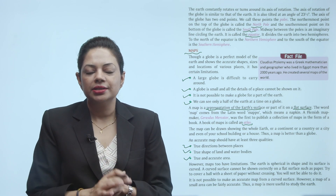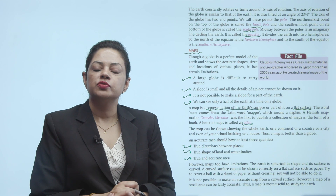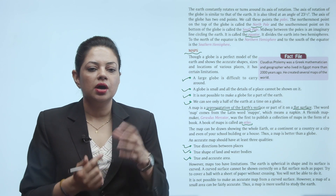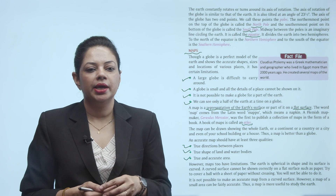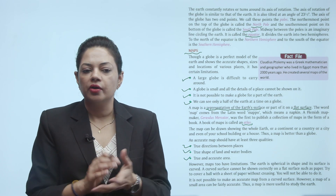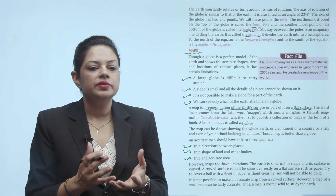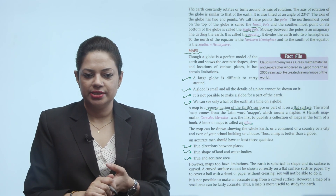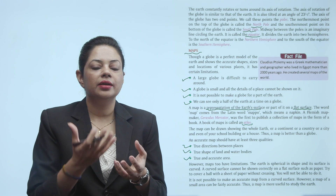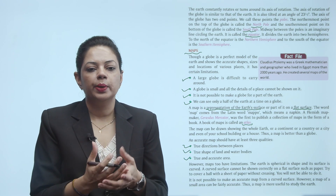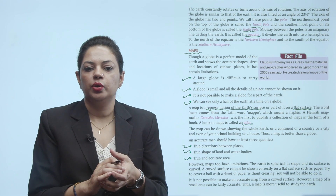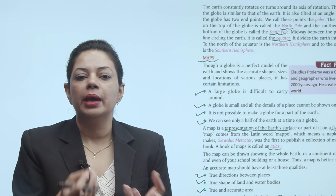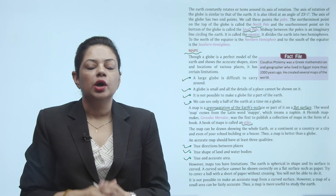Maps mein bhi kuch limitations hain. Jo Earth hai woh spherical shape mein hai lekin curved bhi hai, aur ek curved surface ko flat surface pe dikhana bahut mushkil ho jaata hai. Jaise ki hum kisi ball ko ek sheet of paper se cover karein bina fold hue — toh woh possible nahi hai. Isi tarike se Earth ko ditto hum map pe nahi bana sakte.